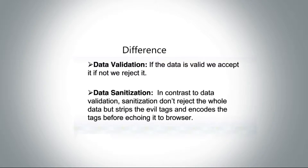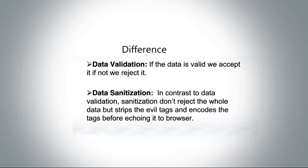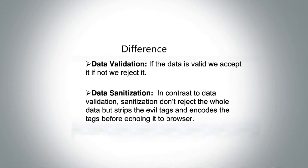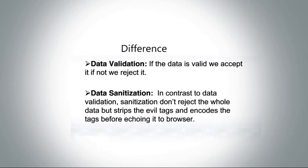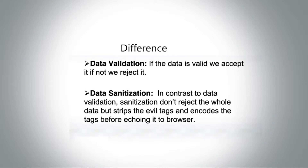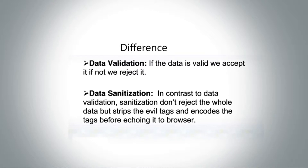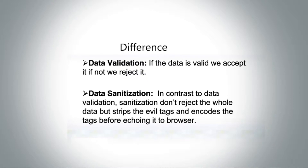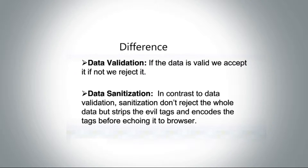Here is the difference between data validation and sanitization. Most people are confused about whether they are the same or different — I like to say they are the same in some ways and different in others. Data validation is simply: if the data is valid, we accept it; if not, we reject it. For example, if you ask for an age field and the user enters text like 'my age is 15' instead of an integer, you reject it and ask the user to re-enter the correct data. That's validation — accept if true, reject if not.